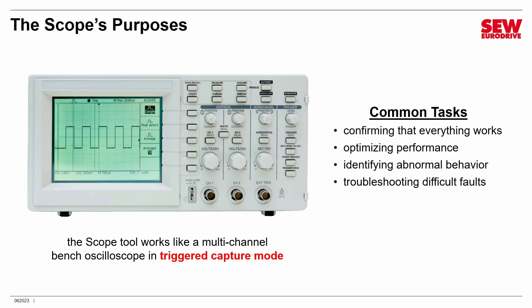Common things we do with the Scope built into Movitools Motion Studio include confirming that everything is working. We monitor various parameters and look at them on the Scope to confirm everything is okay. We can use it for optimizing performance, examining parameters to make sure the response is what we want. The Scope is also used to identify abnormal behavior — monitoring certain parameters can reveal adjustments that need to be made. Finally, the Scope is often used for troubleshooting difficult faults, and we'll look at how to do that before we're finished with this session.